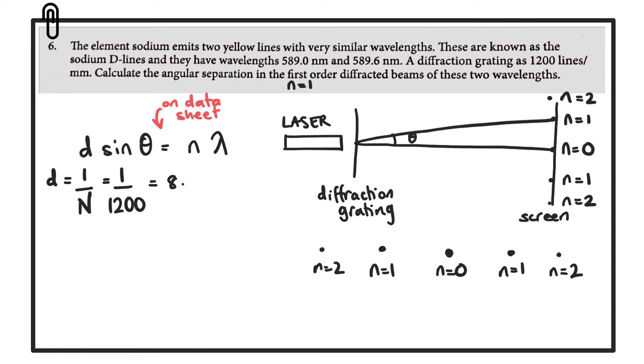Which is 8.33 by 10 to the minus 4. Now we need to be careful of the unit here. This was 1200 lines per millimeter, meaning that we've worked out that the separation of those lines is 8.33 by 10 to the minus 4 millimeters.